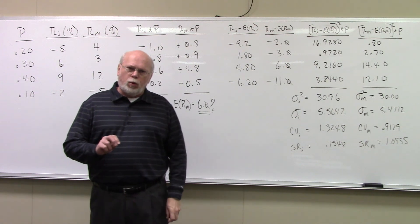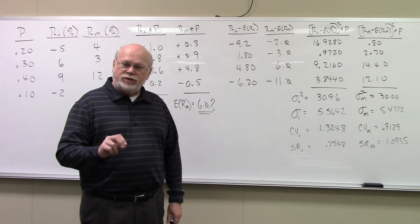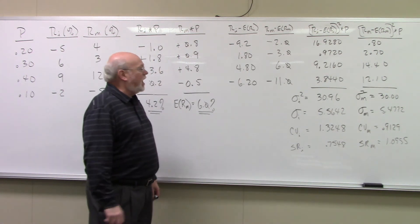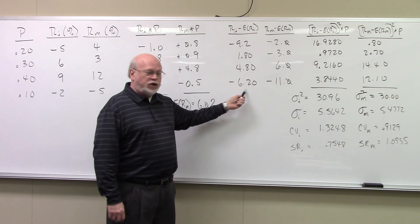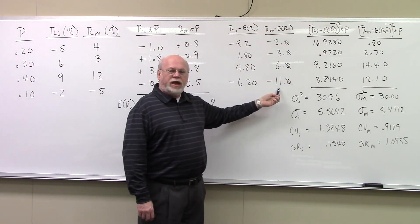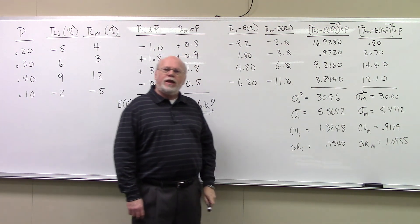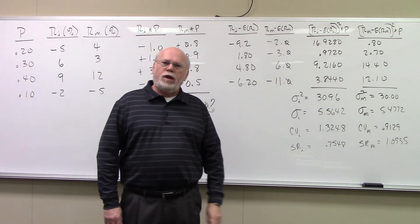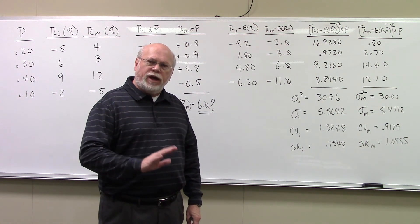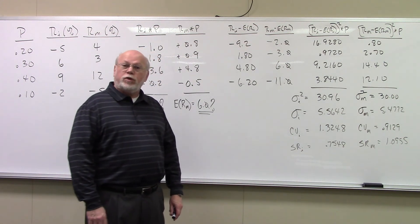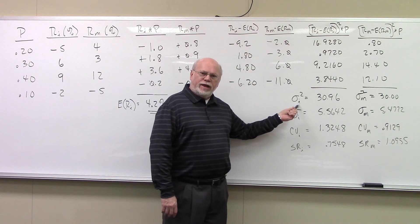Deviations are important — all the risk measures are a function of the deviations. The deviation is the observation minus the mean. These are the deviations for the security, and these are the deviations for the market. Now that we have those, we can calculate risk measures for the various assets. The first risk measure we're going to calculate is variance.